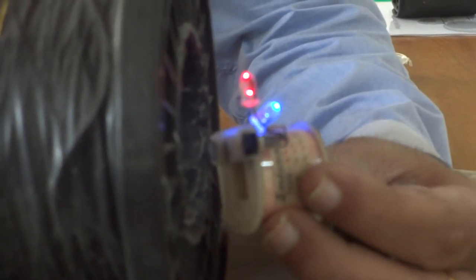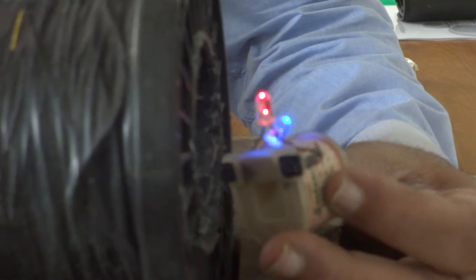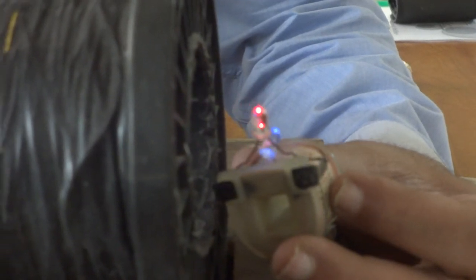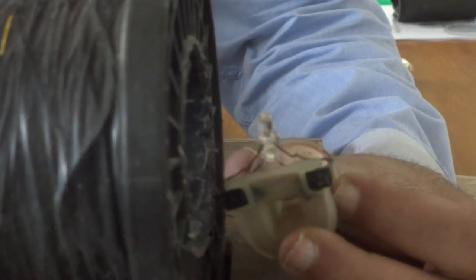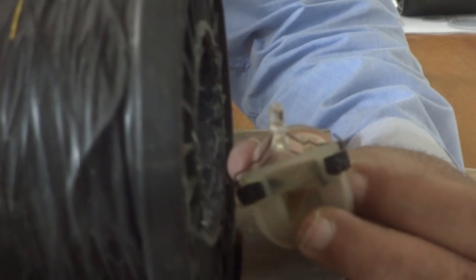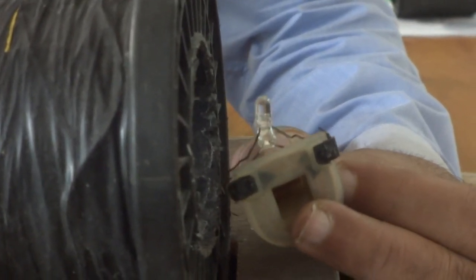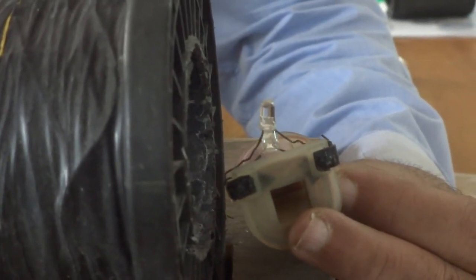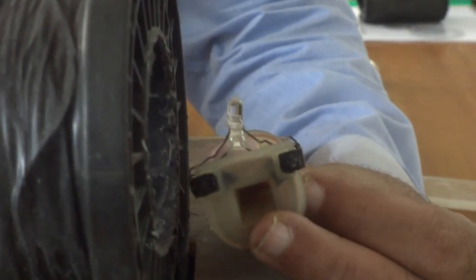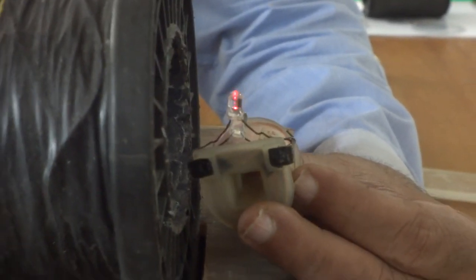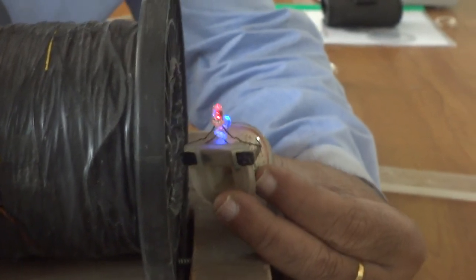Now gradually, I will increase the angle. If you observe, you can see that the LEDs are gradually becoming dimmer and dimmer. Now it is exactly making 90 degrees, so no flux is passing through the secondary coil and hence there is no glow in the LEDs.